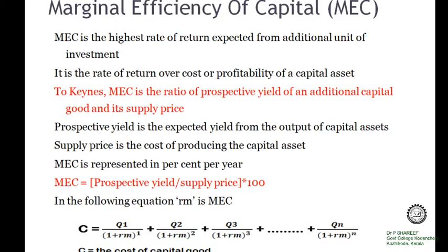Now we can discuss the meaning and the importance of marginal efficiency of capital. In the Keynesian model of the determination of employment, income and output, Keynes gives more importance to investment demand. Investment is determined by two factors: marginal efficiency of capital and rate of interest.